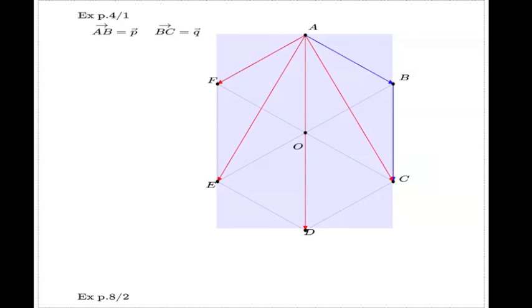This is the p vector, this is the q vector. Our job is to find the algebraic expressions for the red vectors—three of these red vectors are diagonals of the hexagon and the other one, AF, is the side which goes the other way. Out of these four red vectors, which one do you think is the easiest to find?